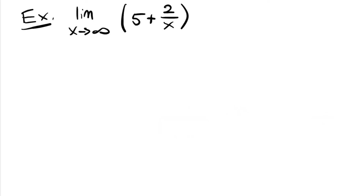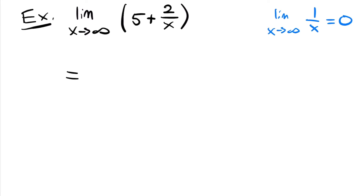Next, we have the limit as x approaches infinity of 5 plus 2 over x. This is going to use our special limit that the limit as x approaches infinity or negative infinity of 1 over x is equal to 0. It doesn't matter if you multiply it by any constant — this 2 isn't going to matter. We can multiply by 3x, 4x, it would still be 0, and the power of x in the denominator could also be larger, like x squared or x cubed, and the limit as x approaches infinity would still be 0. So we know that when we're taking a limit of two functions that are added together, we can take the limit of each separately. So this equals the limit as x approaches infinity of 5, which is just 5, plus the limit as x approaches infinity of 2 over x, which is 0. So we'll have 5 plus 0, which equals 5.